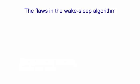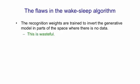There are flaws in this algorithm. The first flaw is a rather minor one, which is the recognition weights are learning to invert the generative model. But at the beginning of learning, they're learning to invert the generative model in parts of the space where there isn't any data. Because when you generate from the model, you're generating stuff that looks very different from the real data, because the weights aren't any good. That's a waste, but it's not a big problem.